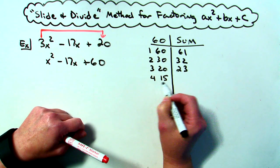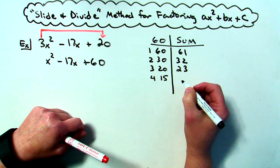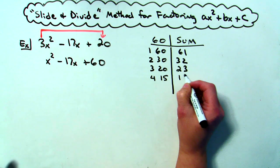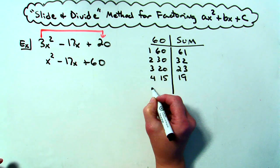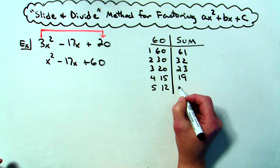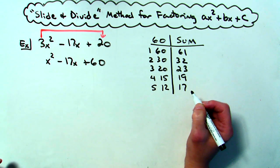4 times 15 is 60 and that will give me a 19. Still not really close. 5 times 12, it's going to give me a 17. So I'm getting really close here.